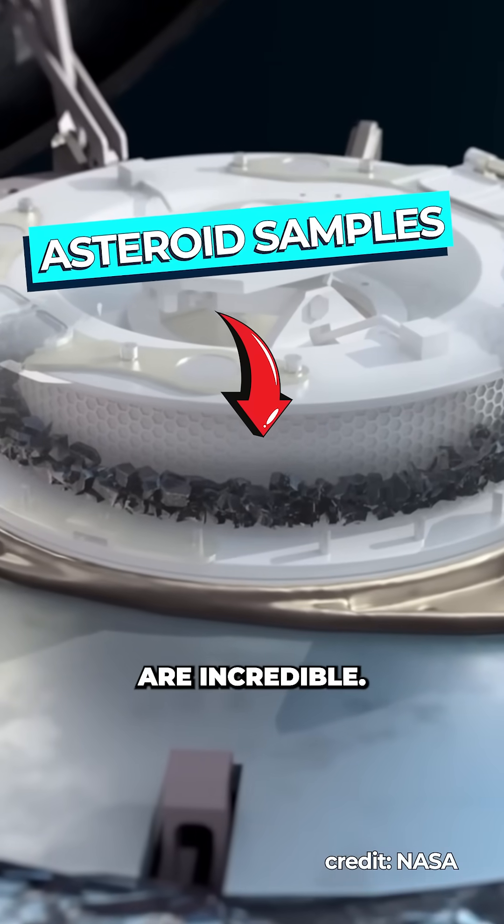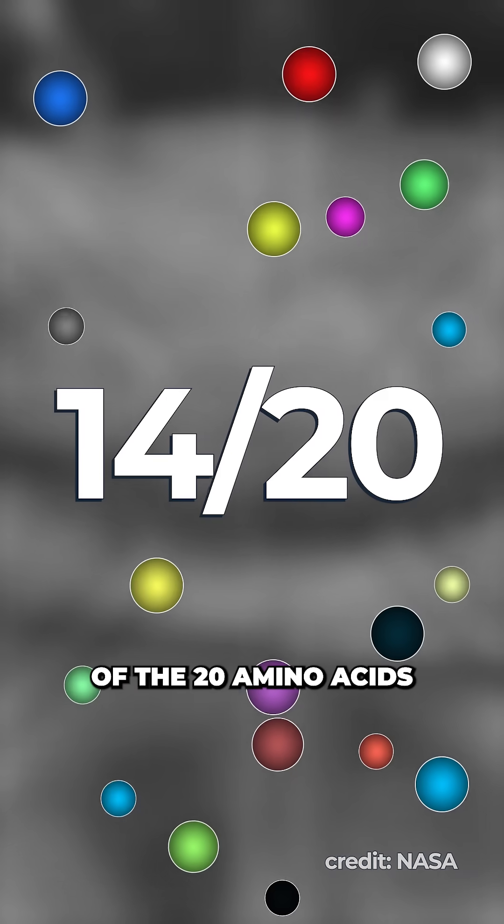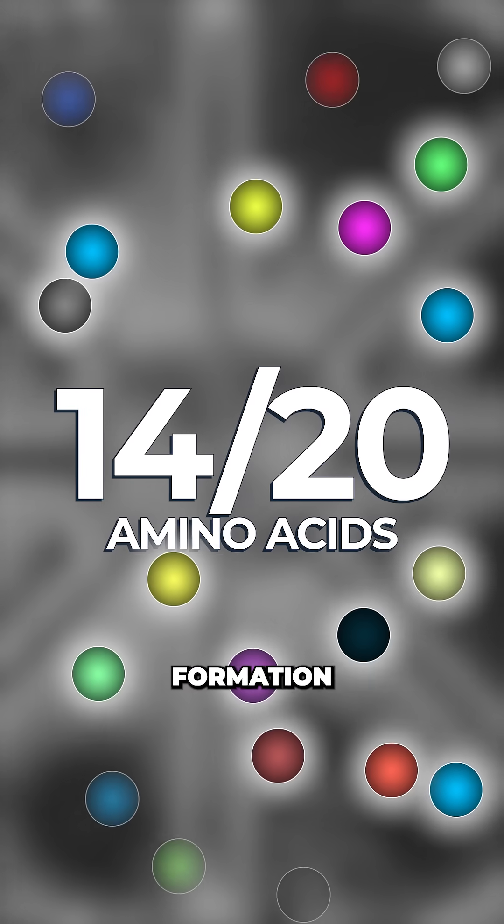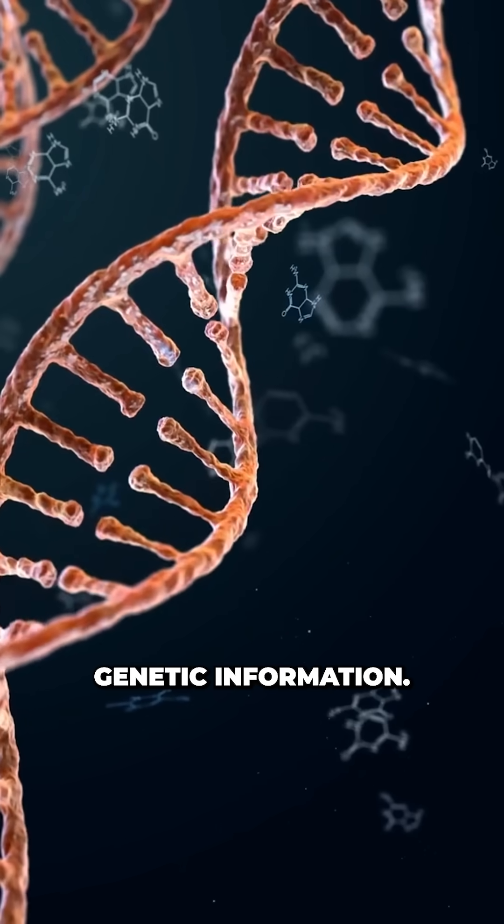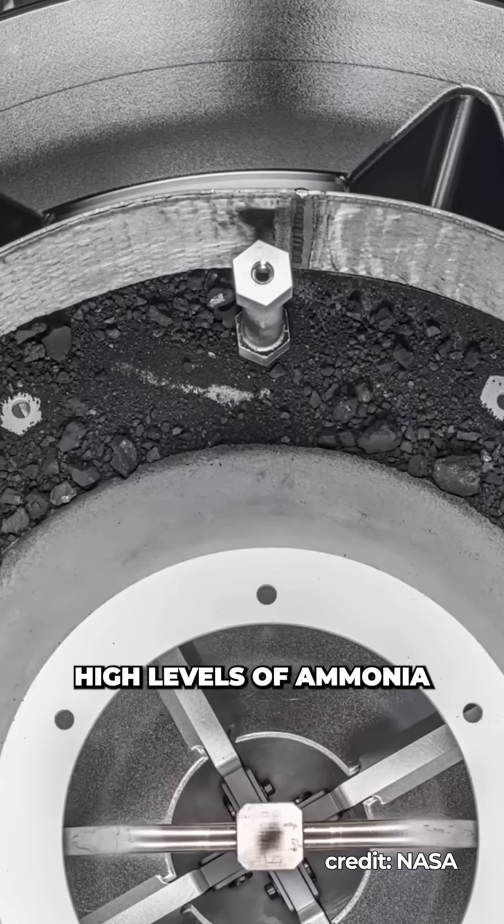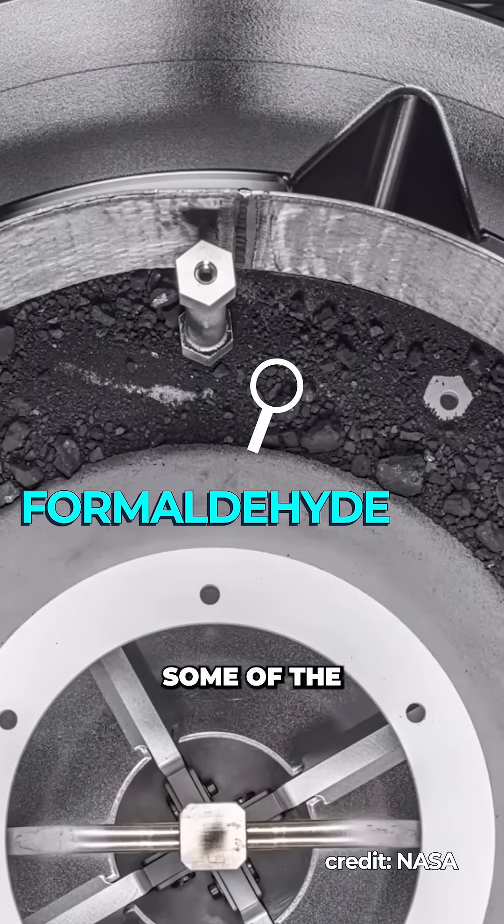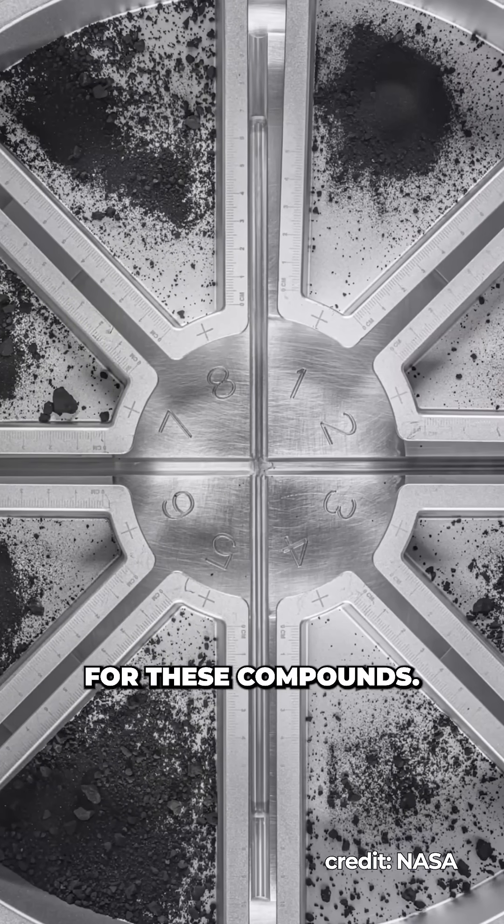The results are incredible. The research team identified 14 of the 20 amino acids essential for protein formation in life on Earth, and all five of the nuclear bases used in DNA and RNA to store and transmit genetic information. They also detected high levels of ammonia and traces of formaldehyde, some of the precursor materials for these compounds.